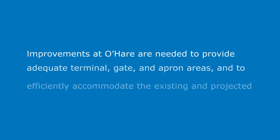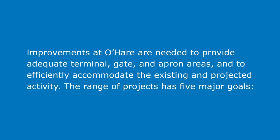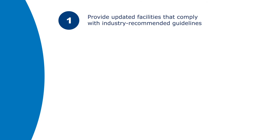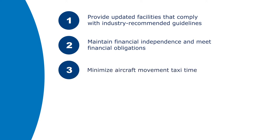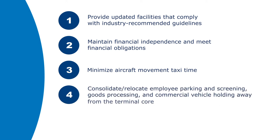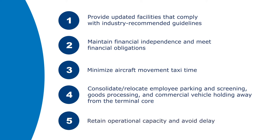In order to provide adequate terminal, gate, and apron areas for existing and projected activity, improvements at O'Hare International Airport are needed. The range of the projects has five major goals: provide updated facilities that comply with industry recommended guidelines; maintain the airport's financial independence and meet its financial obligations; minimize aircraft movement taxi time; consolidate and relocate employee parking and screening, goods processing, and commercial vehicle holding away from the terminal core; and retain operational capacity and avoid delays.